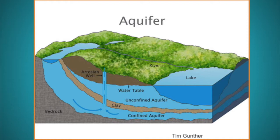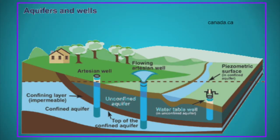Confined aquifers have an impenetrable rock layer as the upper boundary. These aquifers are usually located further from the ground surface. Water in this type of aquifer is under pressure and will rise up in a well to a certain height without any pumping. An artesian well is when water in a confined aquifer rises high enough to reach past the ground surface and flow over the top of the well. This occurs when the water in the confined aquifer is under significant pressure caused by the rock layer above it.